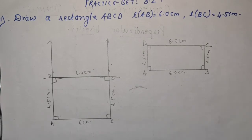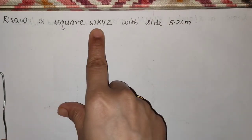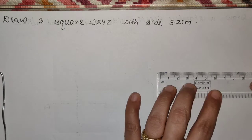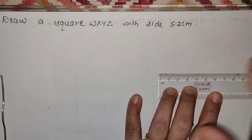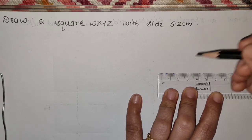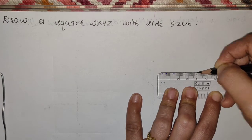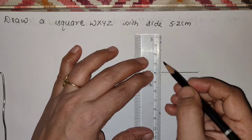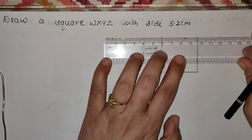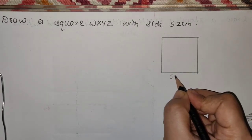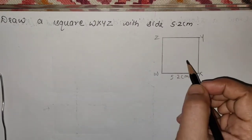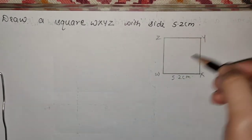Now we will move to the next sum. See the next sum — Draw a square WXYZ with side 5.2 cm. Now students, हमको पता है square में all sides are equal और each angle is a right angle — यह property है। यह आपको यहाँ mention नहीं है, इसलिए आपको property याद करना है। यह हमारा rough diagram है — this is your square, 5.2 cm.